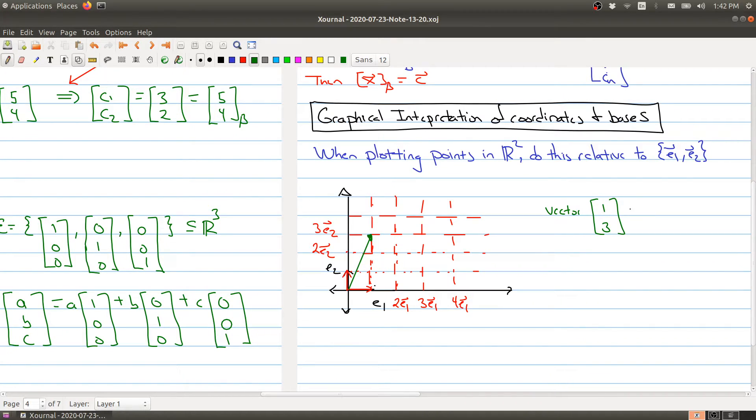And the vector 1, 3 is at the point 1, 3 in the grid described by the vectors E1 and E2. And this is really what the coordinates relative to a basis are telling us.